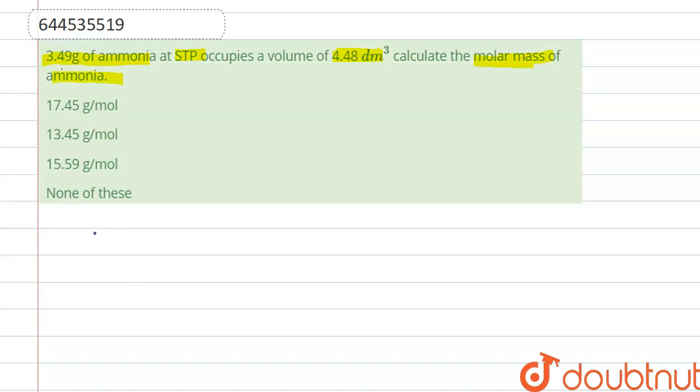So here the volume is given, that is 4.48 decimeter cube, so we can write this as 4.48 liter. And gram molecular mass at STP we know that it is 22.4 liter.